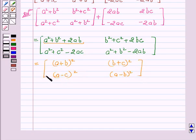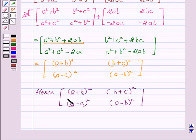So this is the required matrix. Hence, A plus B whole square, B plus C whole square, A minus C whole square, A minus B whole square is the required matrix.